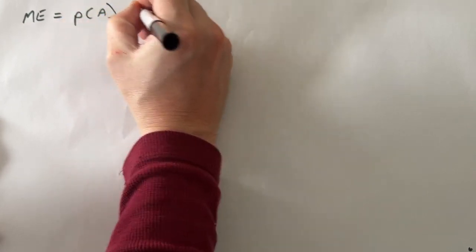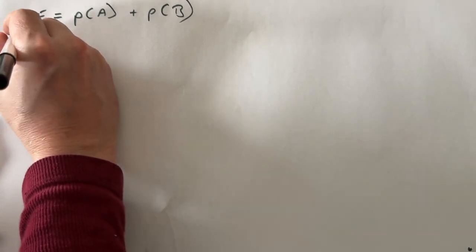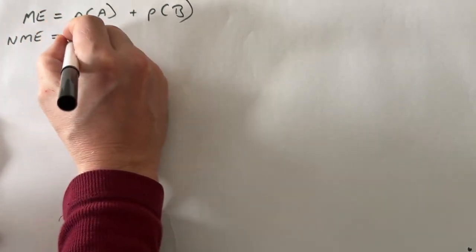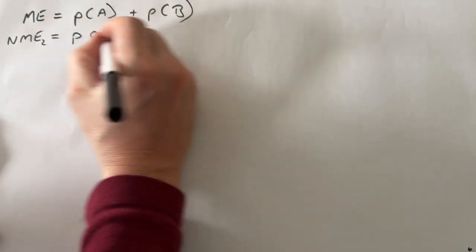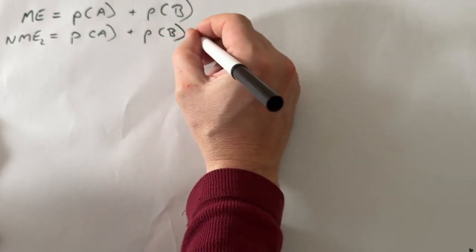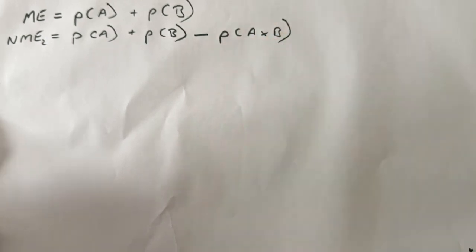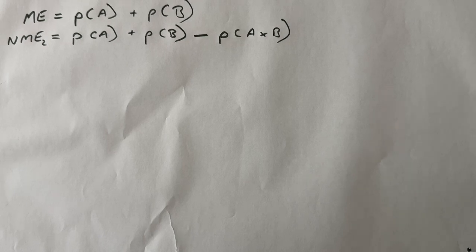Let's get a new page. For a mutually exclusive OR, where only one event can happen, we add both together: the probability of A plus the probability of B gives us our probability. But the non-mutually exclusive OR actually over-counts. If we have two events, the probability of A gets added to the probability of B, and we then have to subtract the probability of A times B — the probability of both events happening at the same time. That's our non-mutually exclusive OR calculation with two events.